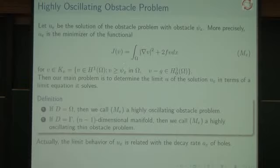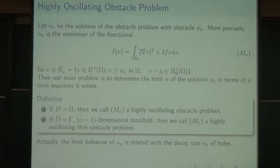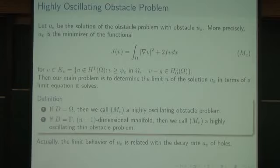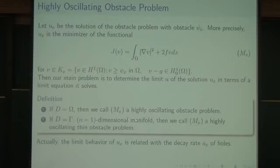Suppose u_epsilon is the solution of the obstacle problem when the obstacle is psi_epsilon. Our main problem is to determine the limit u of the solution u_epsilon in terms of a limit equation — we usually call this homogenization. If T is chosen to be the whole space, we call this a highly oscillating obstacle problem. If T is chosen on the (n-1)-dimensional manifold gamma, we call it a highly oscillating thin obstacle problem — this is what I am considering.